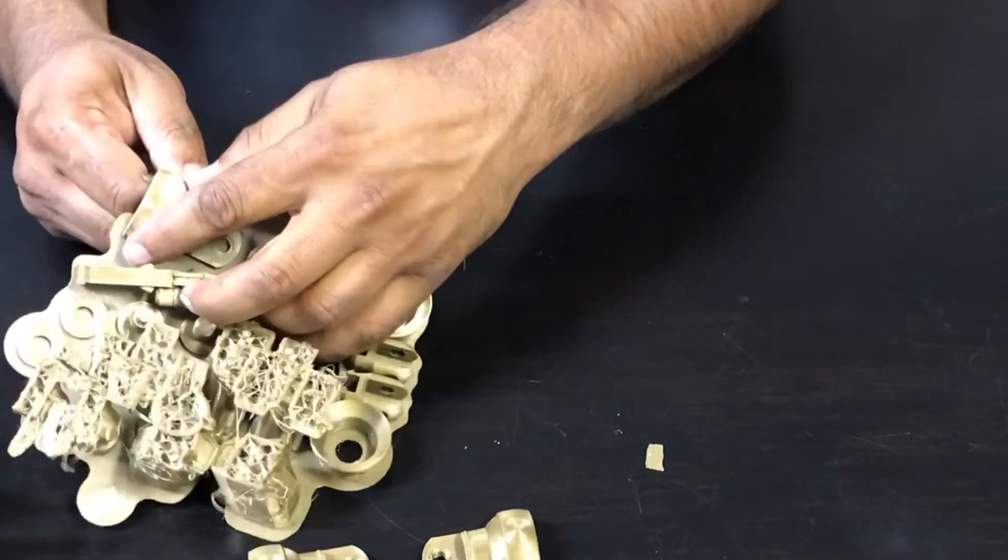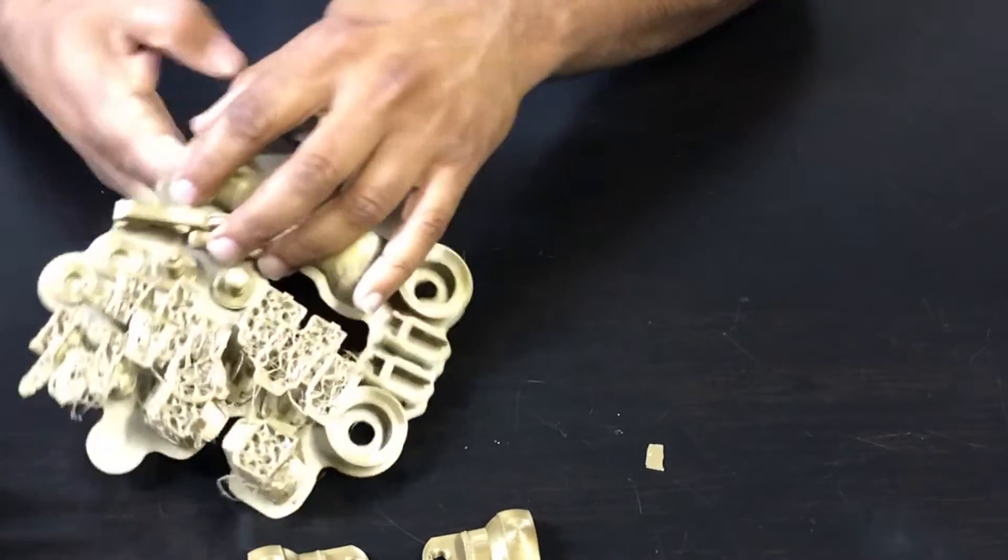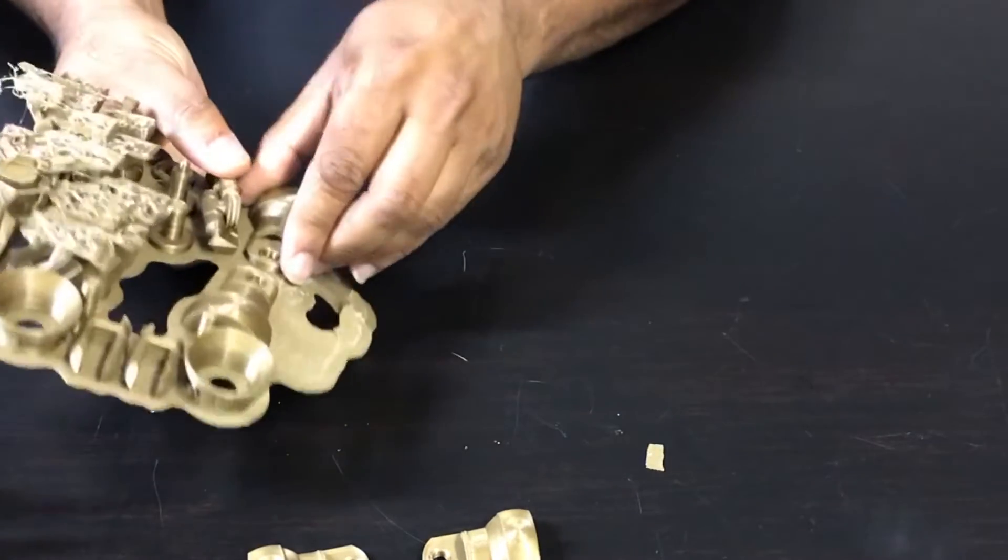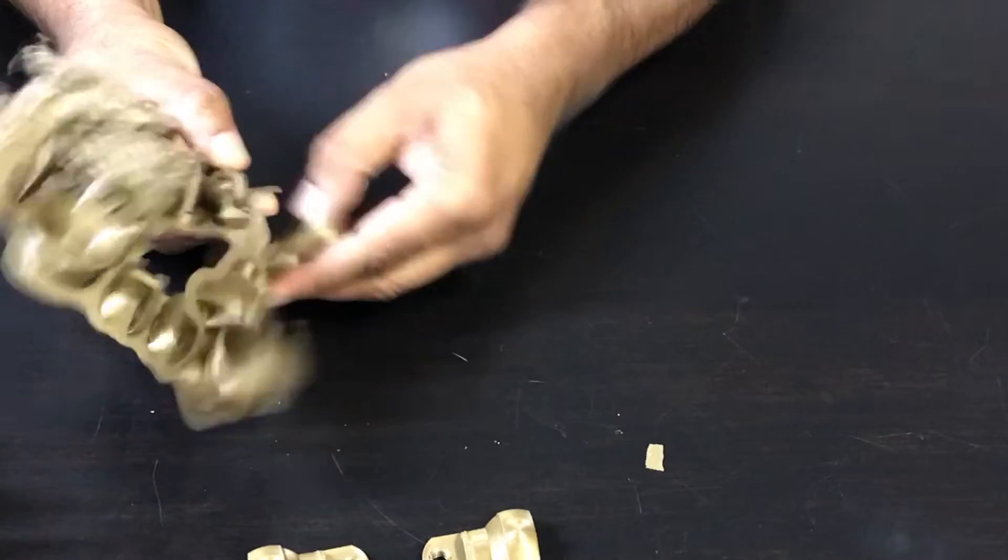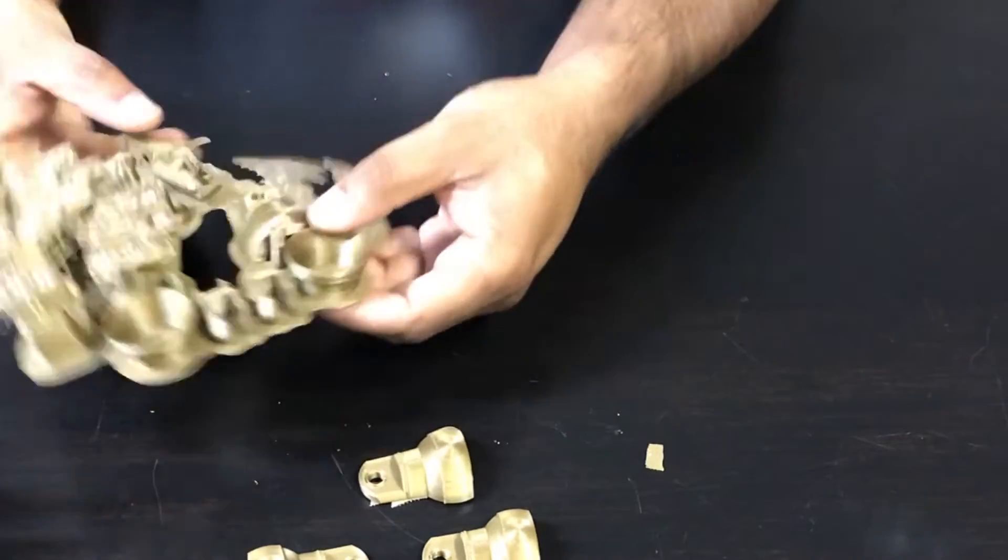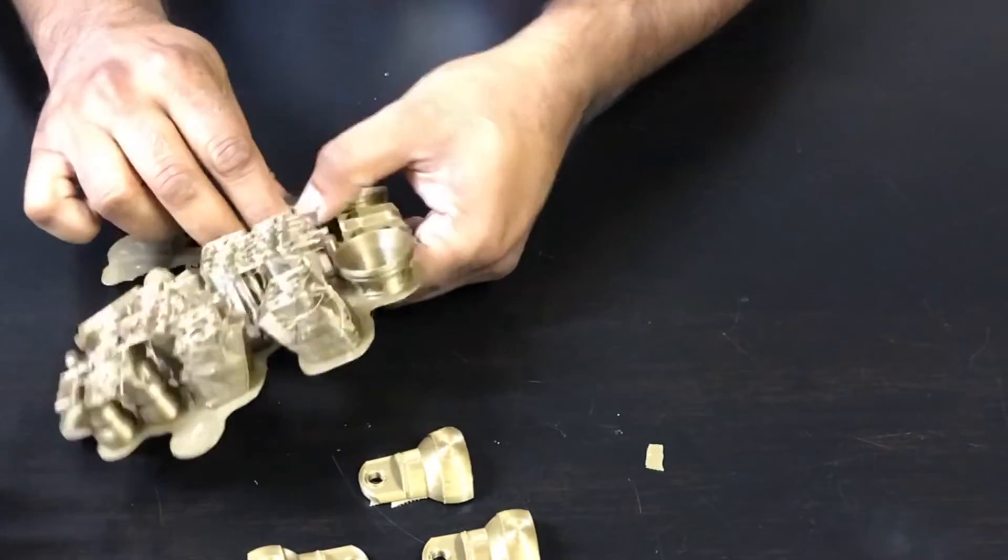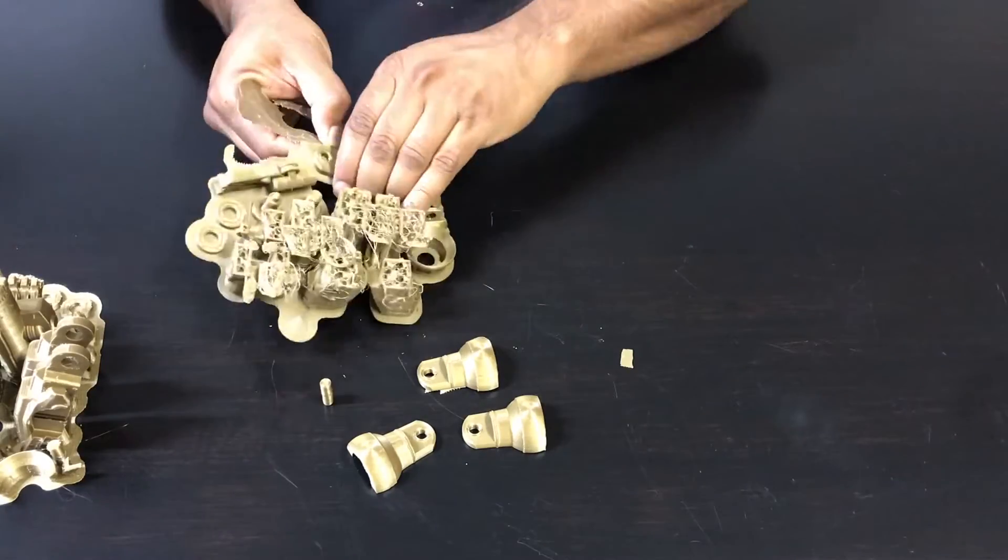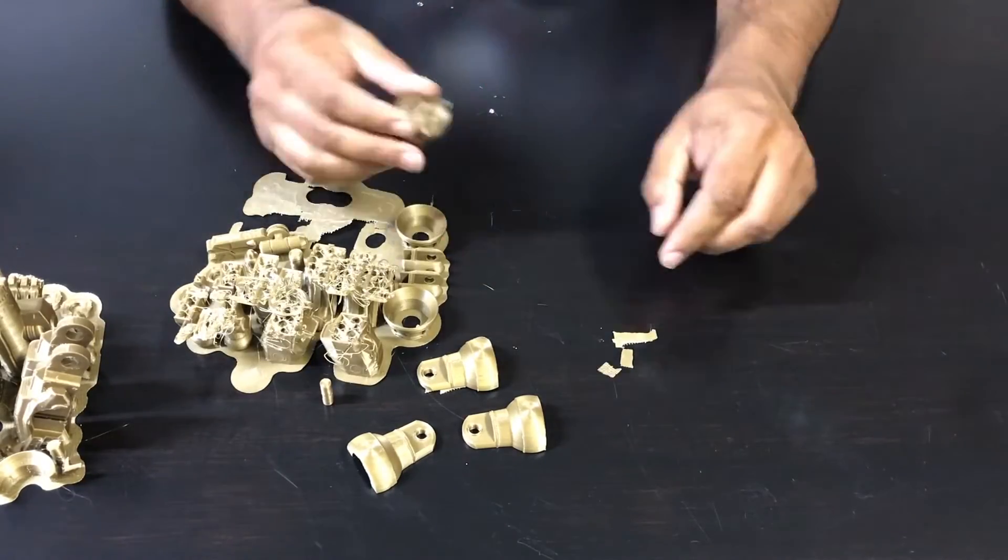I have printed them on the Creality CR10, the 10S, TiVo Tornado. Now when I did get to the AlphaWise U30, I did have to change the settings a little bit. I don't know why it wouldn't just pop right off.